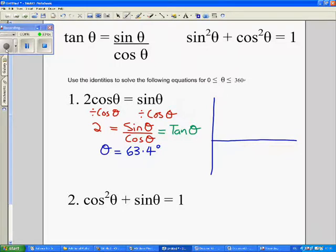Now the tan graph looks like this. It first of all goes off to infinity at 90 degrees. Then we have going back to 0 at 180 degrees, off to infinity again to 270 degrees.